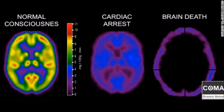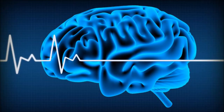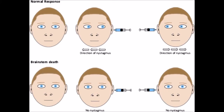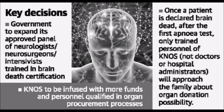An important note: brain death is not a coma. A coma is a state of deep unconsciousness where the brain continues to function and the person can breathe on their own without the help of a ventilator. Unlike brain death, in a coma the brain still has the capacity to heal. If there is activity in the brain, the person will not be declared brain dead. In India, a panel of four doctors must declare you brain dead before your organs can be harvested. This is done after a series of exhaustive tests including the cornea reflex test, ear reflex test, gag reflex test, and apnea reflex test, which are repeated twice within a time frame of six hours. The panel must include the medical administrator in charge of the hospital, an authorized specialist, a neurologist or neurosurgeon, and the medical officer treating the patient.